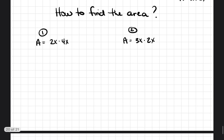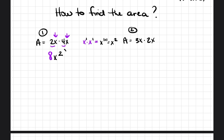Now we multiply both expressions and then add them together. For 2x times 4x: first, multiply the coefficients — the numbers in front of the variables — 2 times 4 equals 8. Then multiply the variables: x times x. When multiplying variables, you add their exponents. Both have an invisible exponent of 1, so 1 plus 1 gives us x squared. The area of the first rectangle is 8x squared.